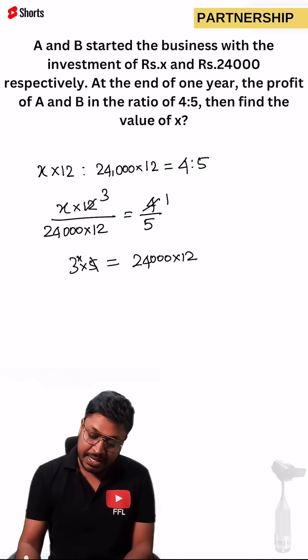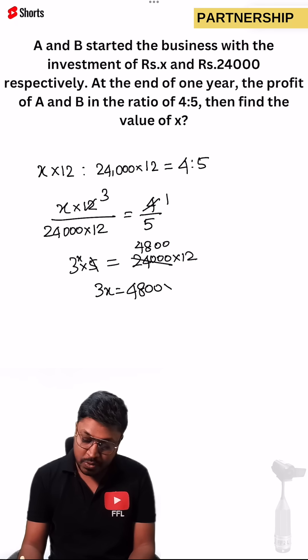We can cancel this on 5 table which is 5, 4s are 20. So remaining will be 4,800, right. And then we can cancel, 3x is equals to 4,800 into 12.